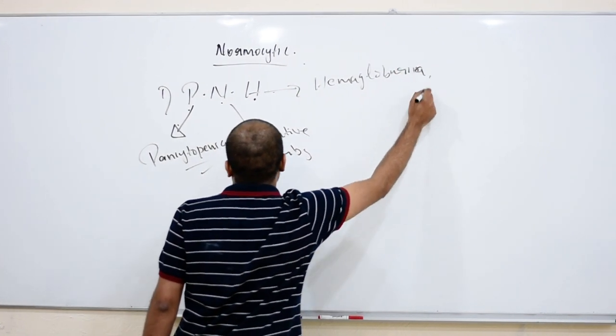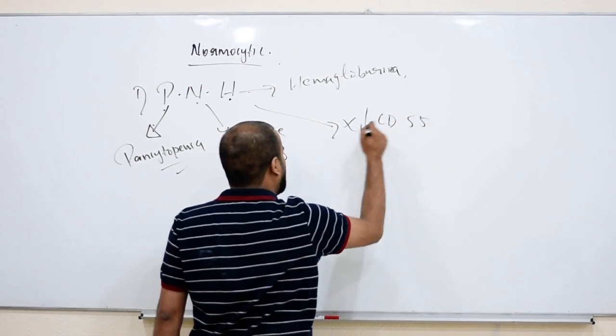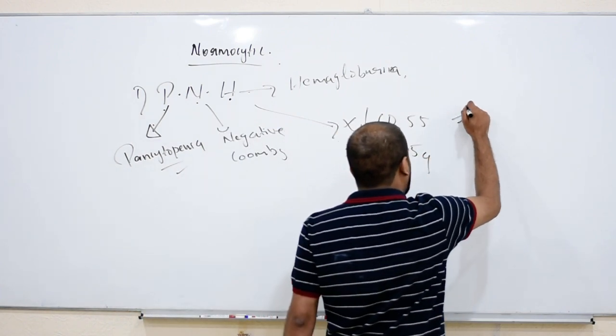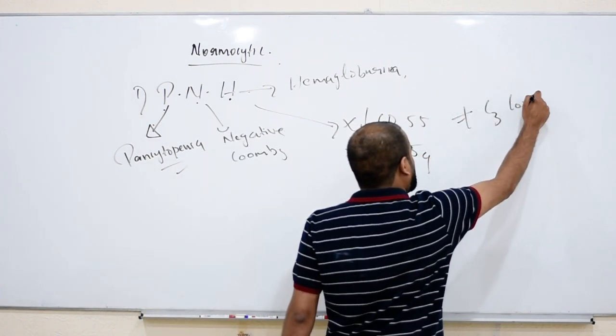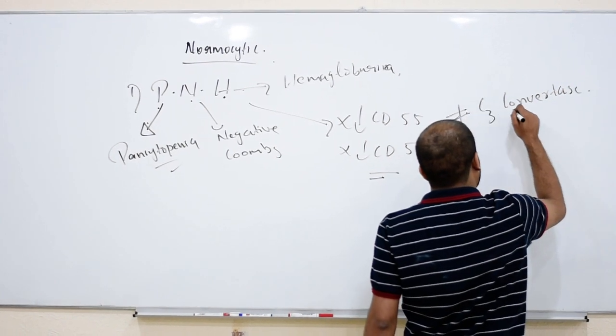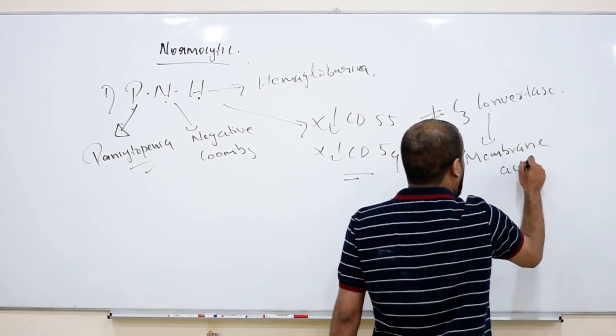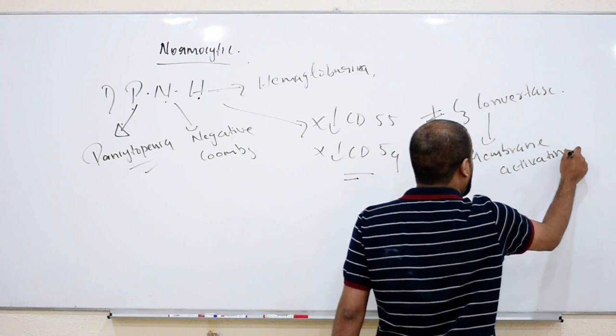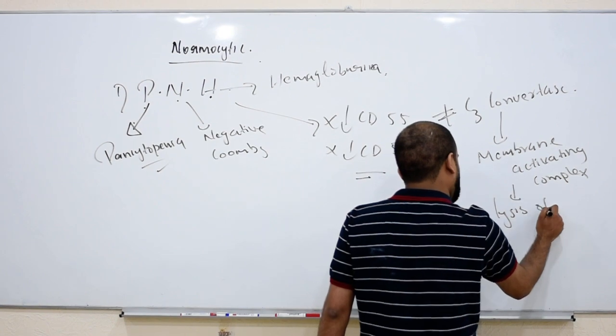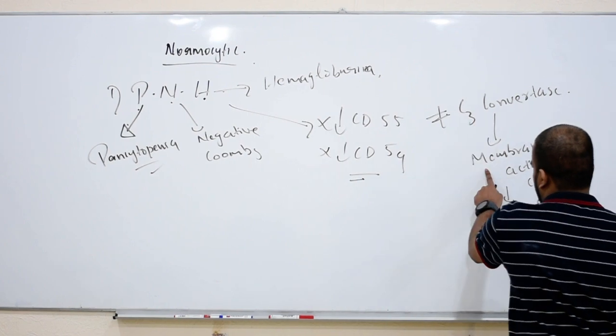Remember like a mnemonic. Now what is the main mechanism here? There will be decrease in two genes: CD55 and CD59. Actually these are the genes that will stop C3 convertase. C3 convertase has to be stopped because they will activate membrane attack complex, and that leads to lysis of cells.